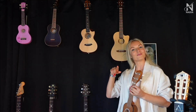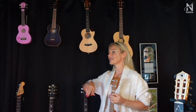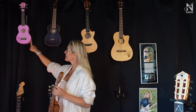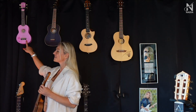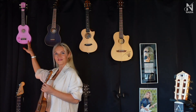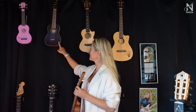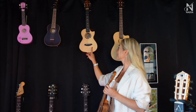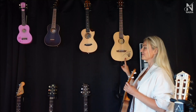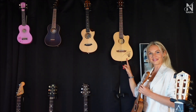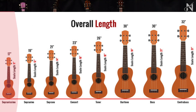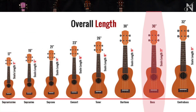There are quite a few types of ukuleles. Common types include soprano, standard ukulele, concert, tenor, and baritone. Less common are sopranissimo, sopranino, bass, and contrabass.